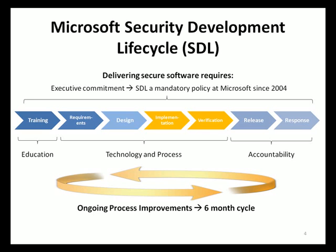In the release phase, the final security review is the major milestone that a Microsoft product team must pass in order to release a product under the SDL. During this meeting, security experts and the development team review all of the activities, mitigations, and security artifacts relevant to the project to ensure that the security quality requirements are satisfied. During this phase, the product team also defines a response plan describing procedures, accountabilities, and contact information in case security vulnerabilities are discovered after the product is operational.